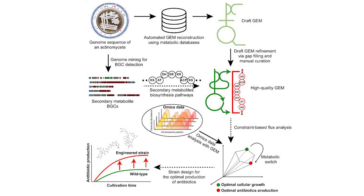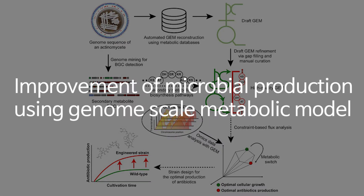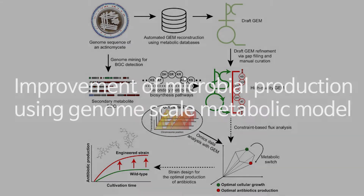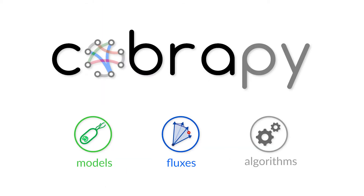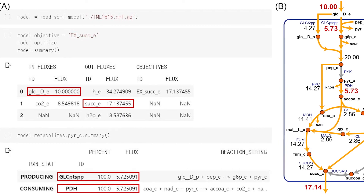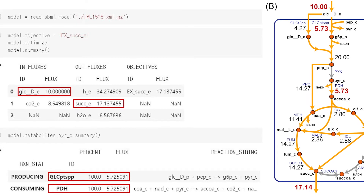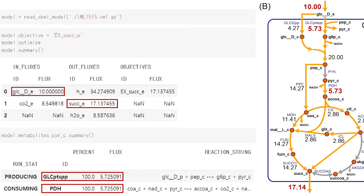The first topic is improvement of microbial production using a genome-scale metabolic model. Microbial production is environmentally friendly, suitable for modular production, and can produce higher yields than typical chemical productions. The genome-scale metabolic model, GEM, is a model that includes information about the organism's genes, proteins, metabolites, and metabolic reactions. Manipulation of this GEM model can predict the amount of microbial production without actually experimenting, which allows for cheaper and faster metabolic engineering.